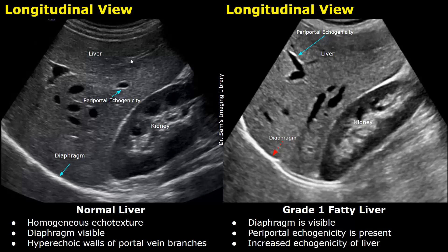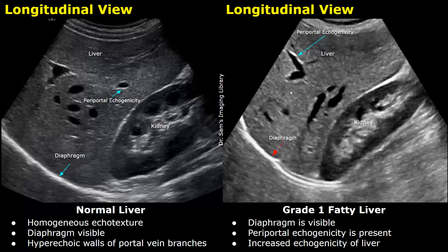This image is of grade one fatty liver. The liver has an increased echogenicity — it appears brighter than normal. The diaphragm is visible and the periportal echogenicity is also visible. Since only the echogenicity of the liver is increased, we will grade this as a grade one fatty liver.